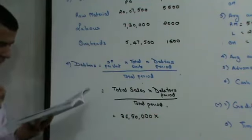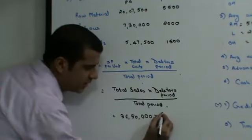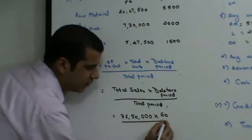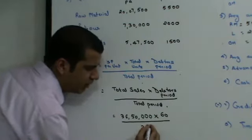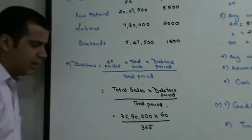This is nothing but total sales into debtors period upon total period. Selling price per unit into total units is nothing but total sales. And they have given you the total sales to be 36,50,000. Debtors period is given to you as 60 days.